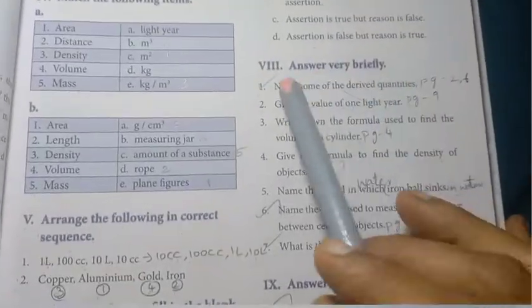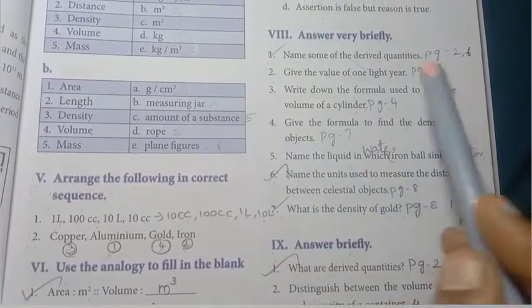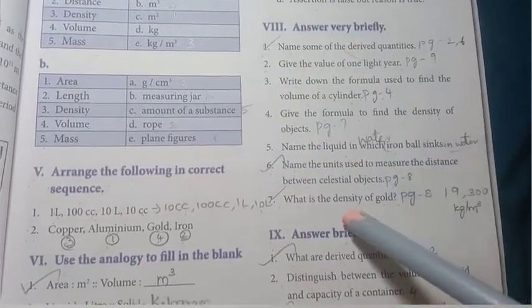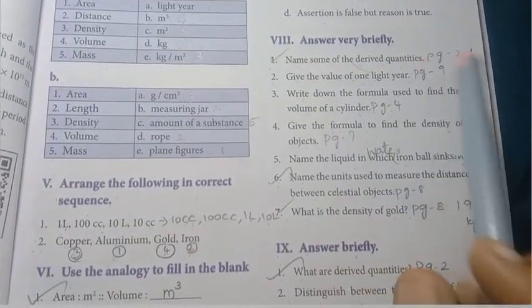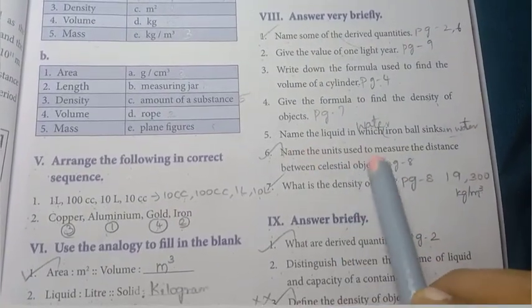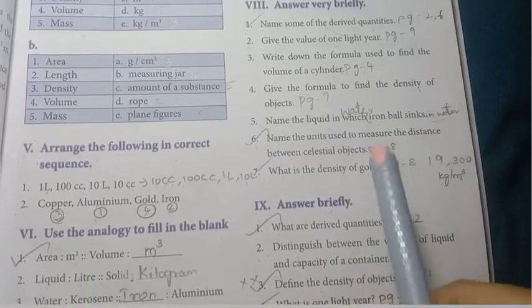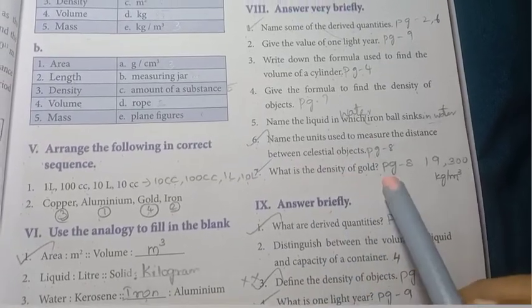First, answer very briefly. These are all 1 mark questions, 1 sentence, 1 word. That's why you can learn all these. The important ones are: name some of the derived quantities, name the units used to measure the distance between celestial objects, what is the density of gold?